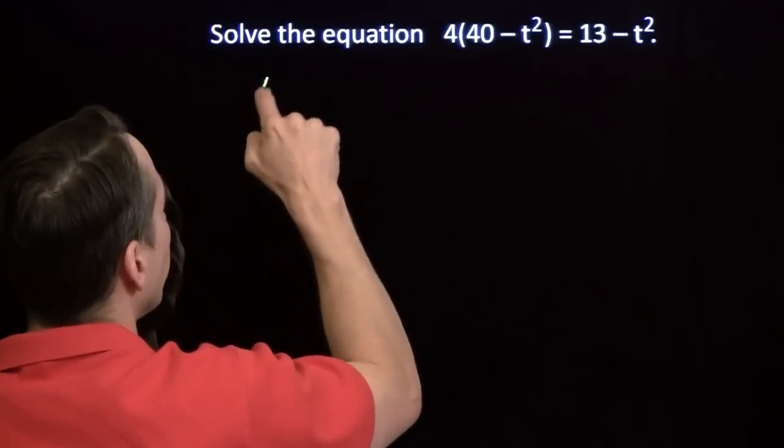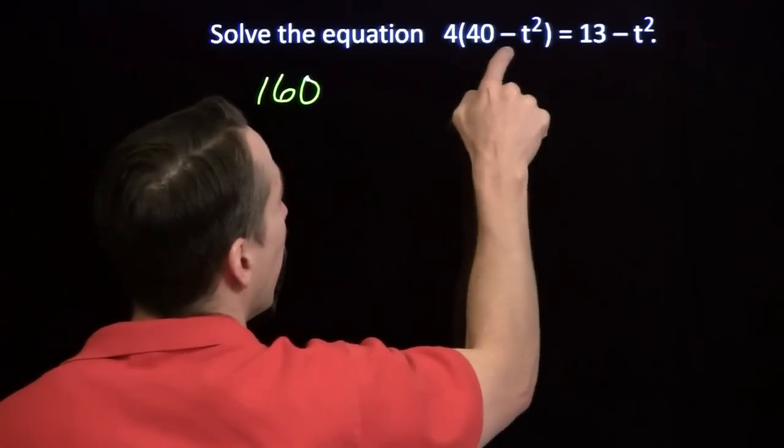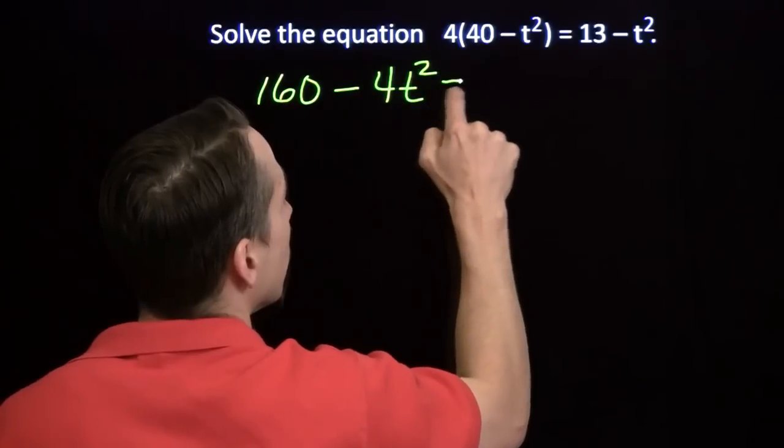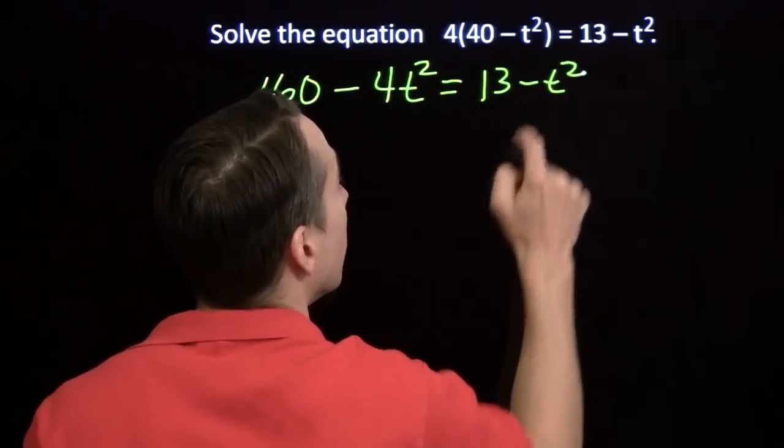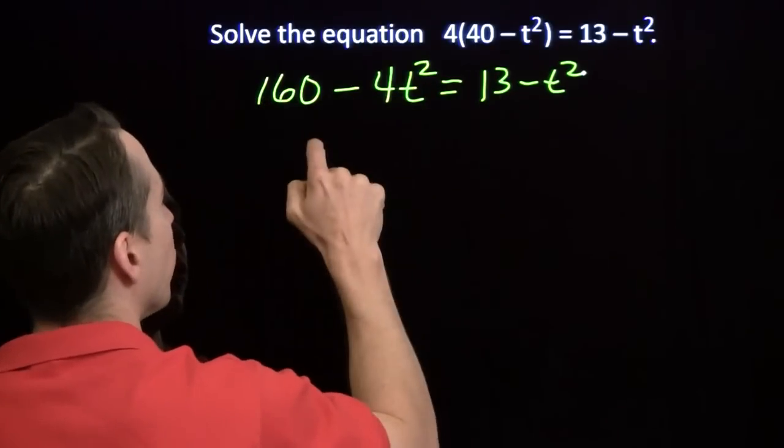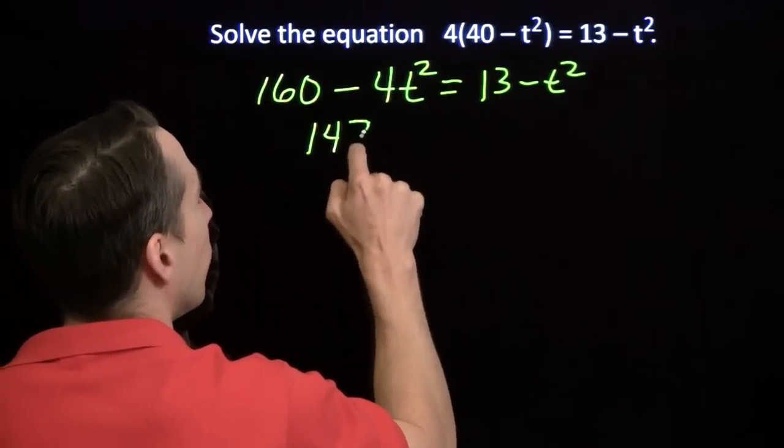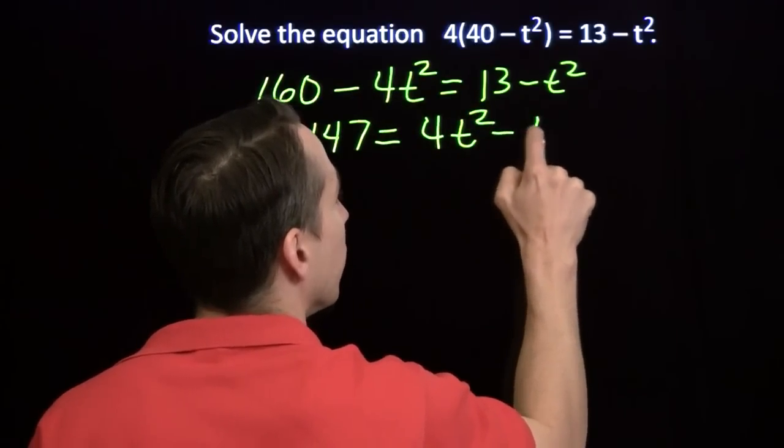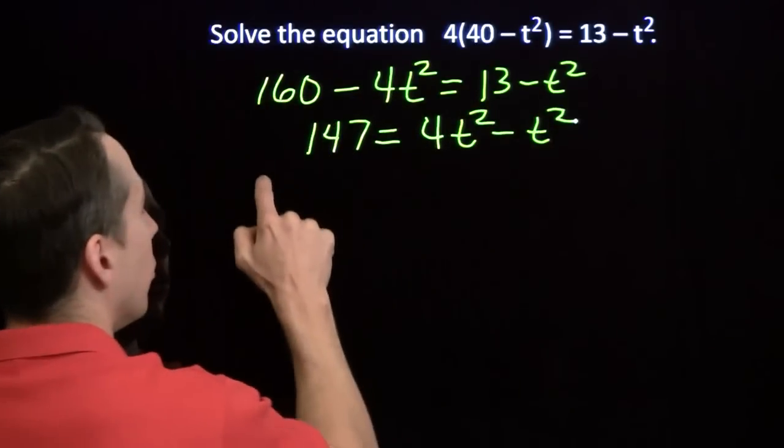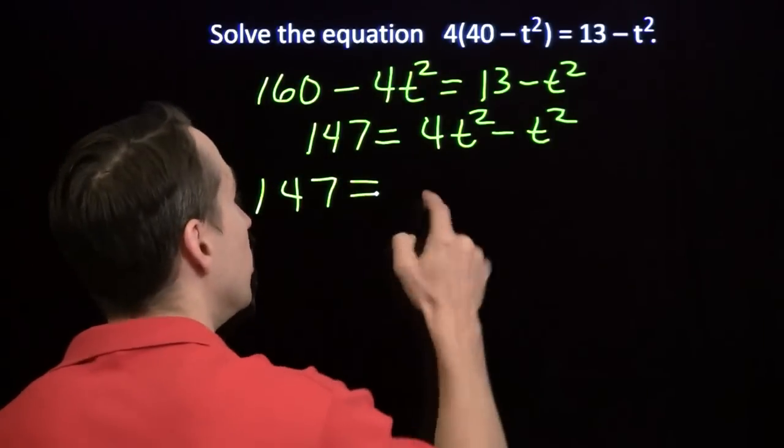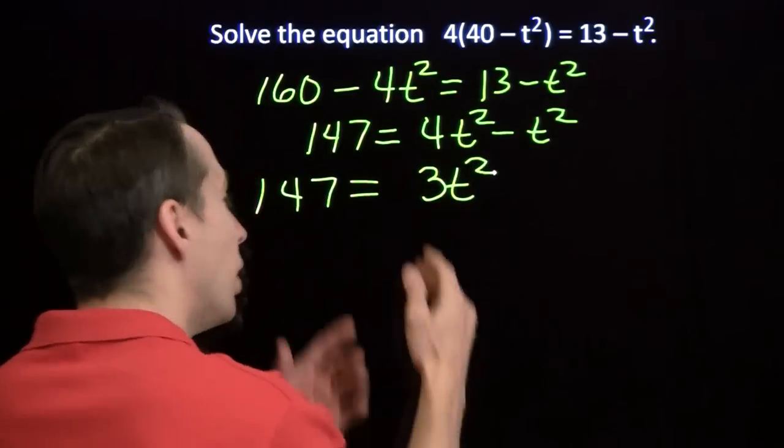You'll just go 4 times 40 is 160 minus 4 times t squared equals 13 minus t squared. You'll subtract the 13 from both sides. You'll add the 4t squared to both sides. You get 147 equals 4t squared minus t squared. So that means 147.